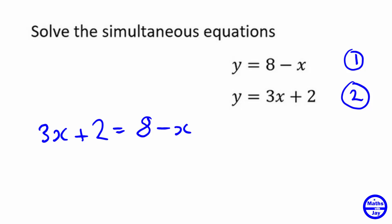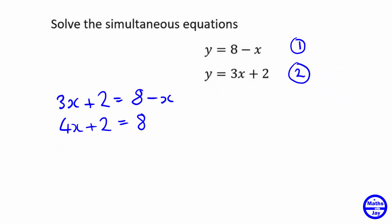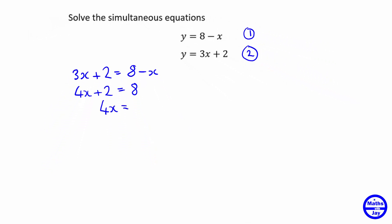So let's get the x's on one side. 3x plus x is 4x, and then subtract 2 from both sides. So 4x is 6, so x is 6 divided by 4. You could write that as 3 over 2 or 1.5.